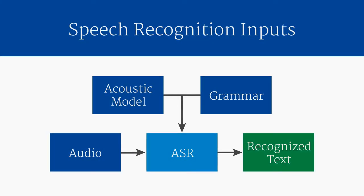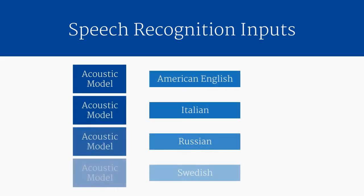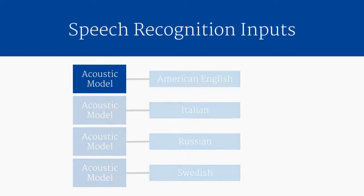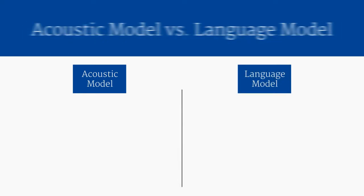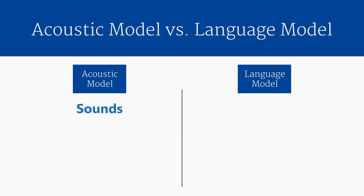As you may remember from the first part of this series, an acoustic model is required for each supported language, as the relationship between sounds and written text varies from one language to another. However, in speech recognition terms, a language model is different than an acoustic model. An acoustic model describes the relationship between sounds and written words, while a language model describes the relationship between different words themselves. So an acoustic model is about sounds, but a language model is just about words.